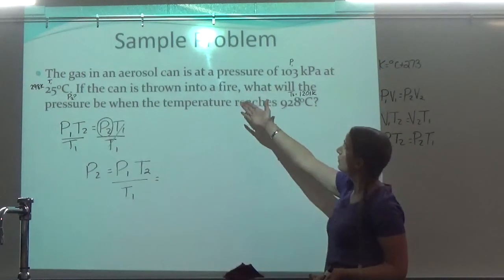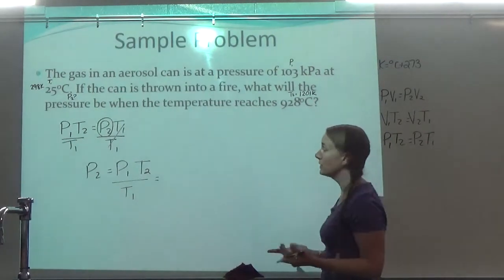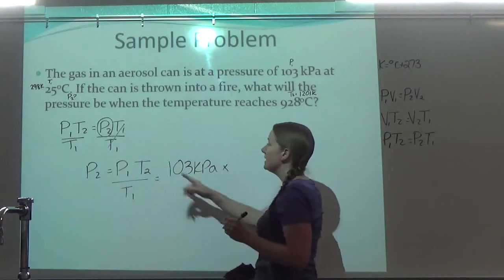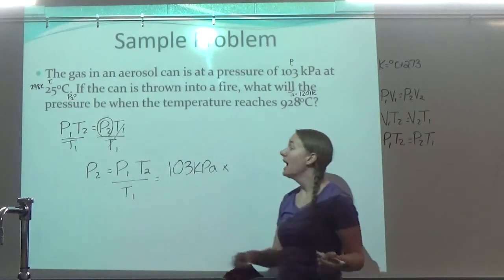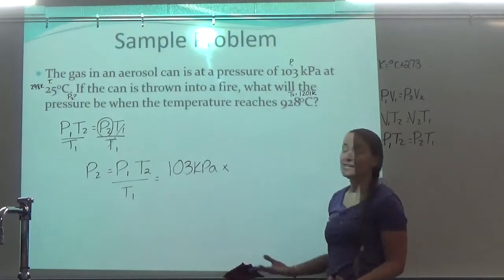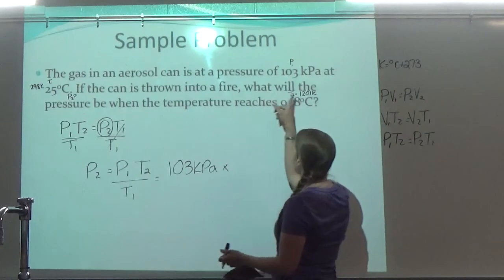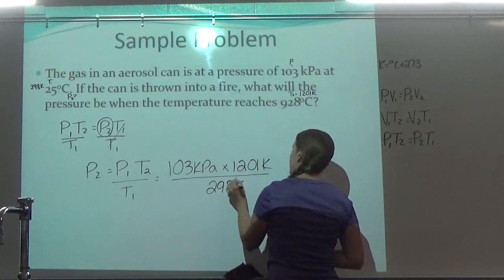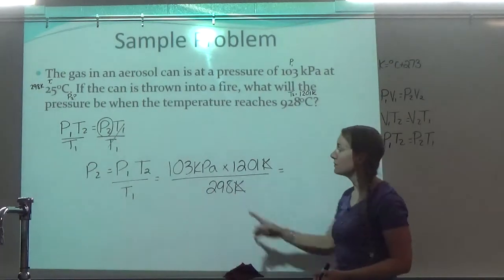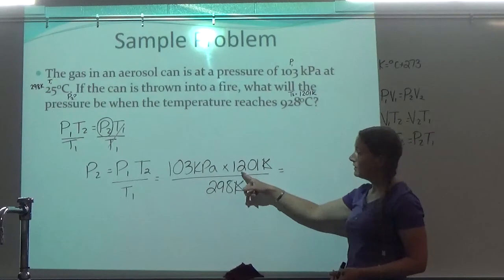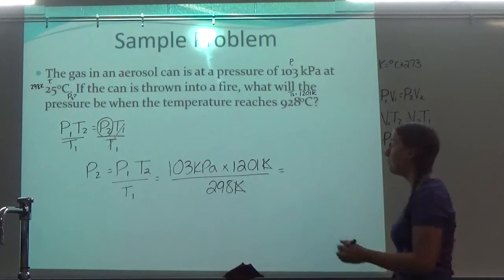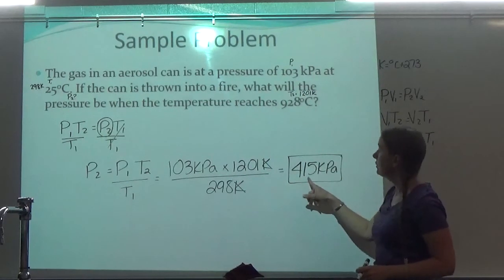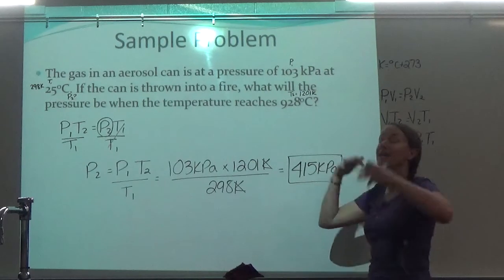Now I'm ready to plug in. P1 is 103 kilopascals, times T2 — remember, it's P1 times T2, not P1 times T1. T2 is 1201 Kelvin, over my T1 which is 298 Kelvin. Those Kelvins cancel, so I do 103 times 1201 divided by 298, and I get 415 kilopascals. So our pressure goes from 103 to over 400 when you throw the aerosol can in the fire — it ends up exploding.